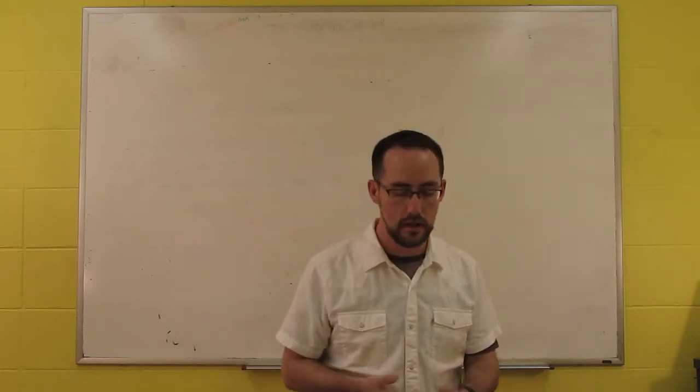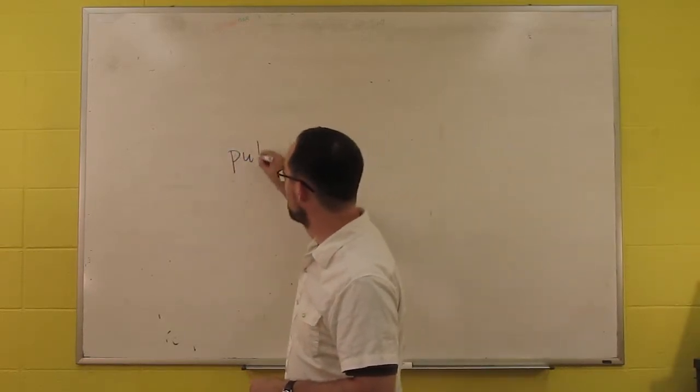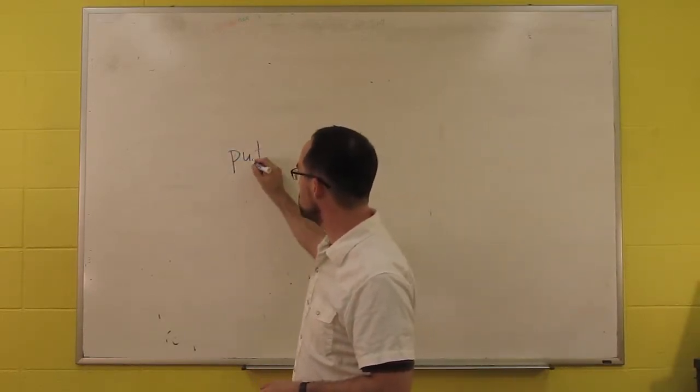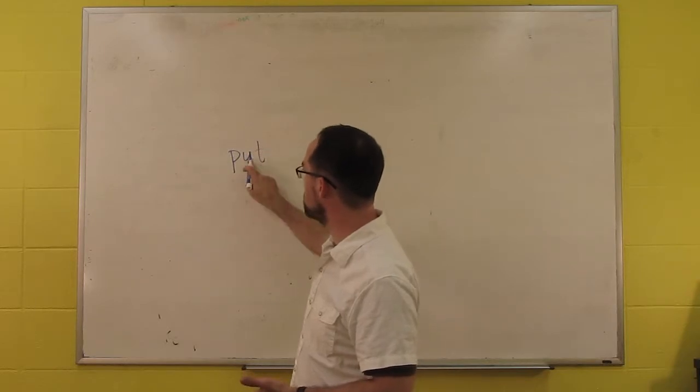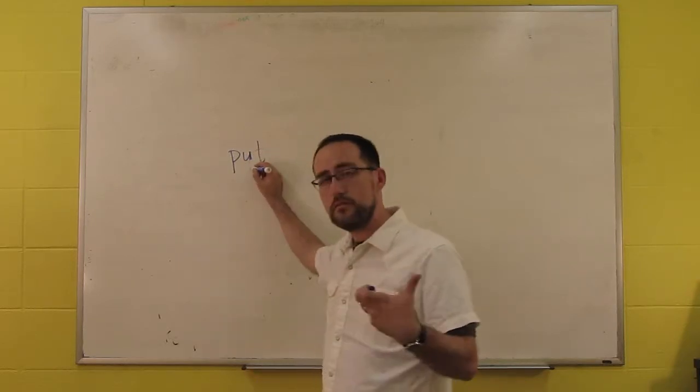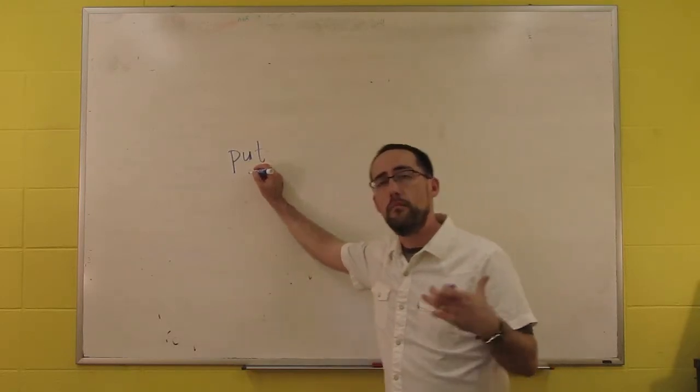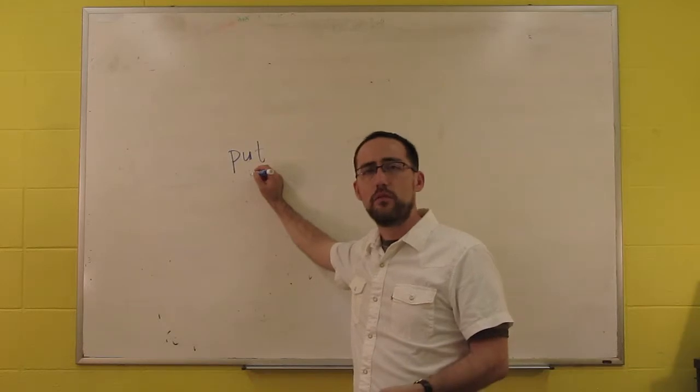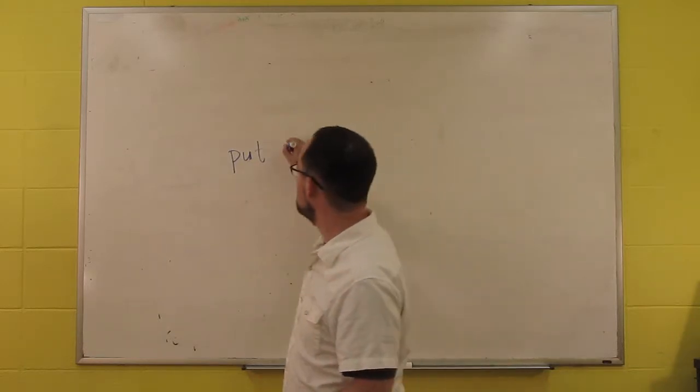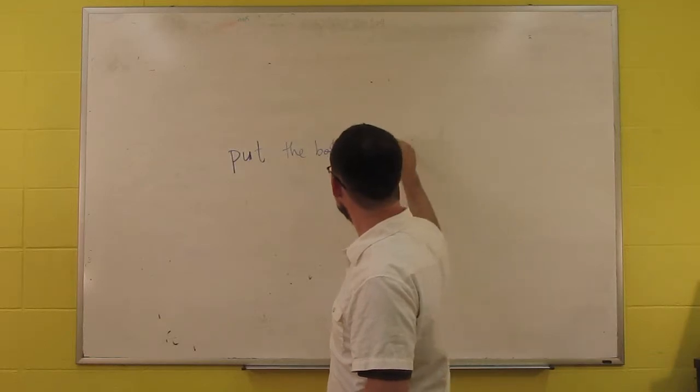So, take an example like put. Put requires three arguments. Why does it require three arguments? Well, because in the syntax it says, I need three arguments. So, it can select for, it can subcategorize for syntactic categories, but there are also semantic requirements.